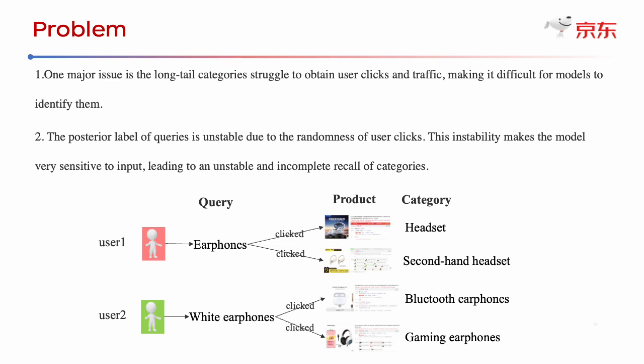where long-tail categories struggle to obtain user clicks and traffic, making it difficult for models to identify them. This exacerbates the problem of low traffic to long-tail categories, creating a vicious circle. This problem becomes more serious for newly built categories due to business development.